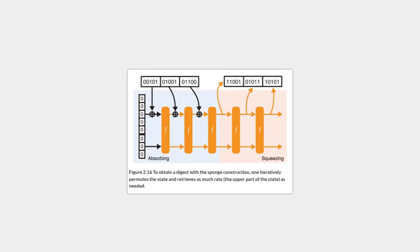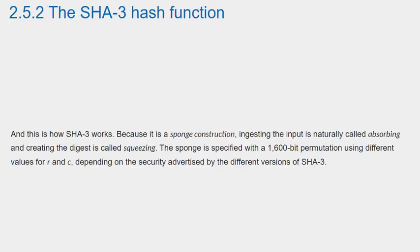So far, so good, but we still haven't produced a digest. To do this, we can simply use the rate of the last state of the sponge — we are not touching the capacity. To obtain a longer digest, we can continue to permute and read from the rate part of the state, as Figure 2.16 shows. And this is how SHA-3 works. Because it is a sponge construction, ingesting the input is naturally called absorbing, and creating the digest is called squeezing. The sponge is specified with a 1,600-bit permutation using different values for R and C, depending on the security advertised by the different versions of SHA-3.